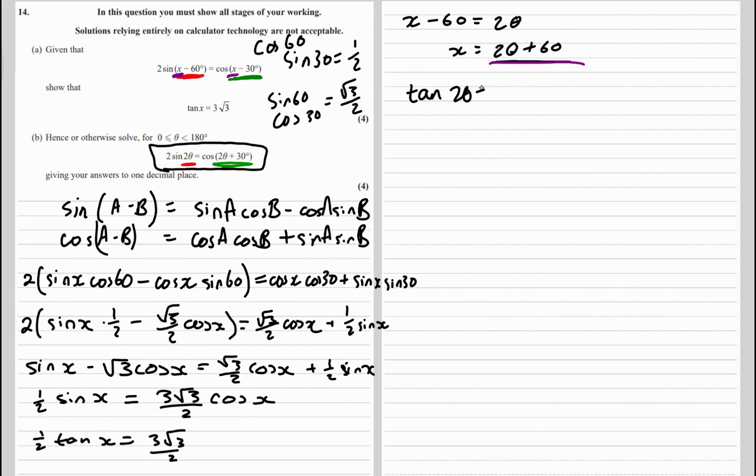Tan 2 theta plus 60 equals 3 root 3, and then we just solve it. So we'll get what 2 theta plus 60 is, then we'll take away the 60 and divide the answers by 2.